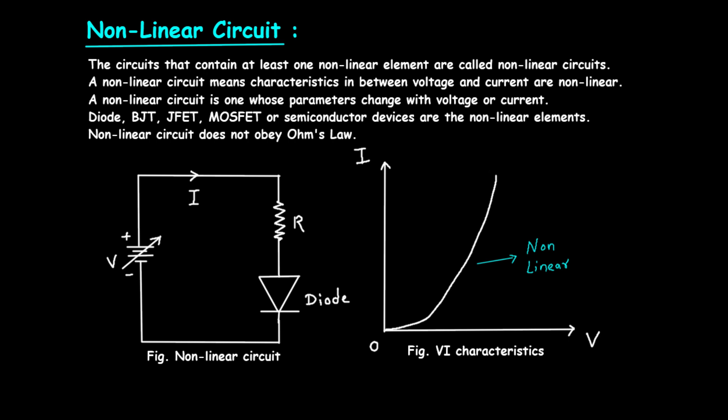Second, transistors. Transistors, such as bipolar junction transistors, or BJT, junction field effect transistors, or JFET, and metal oxide semiconductor field effect transistors, or MOSFET, are semiconductor devices used to amplify or switch electronic signals. Their operation is inherently non-linear.